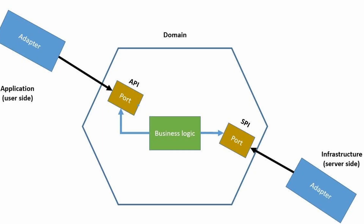First, let's talk about what hexagonal architecture is. Hexagonal architecture is also known as the ports and adapters architecture. It's a software architectural pattern that promotes a clear separation of concerns in your application. It's called hexagonal because it is often depicted as a hexagon with the core application in the center. The key idea is to isolate your business logic from external dependencies such as databases, external services, and user interfaces.